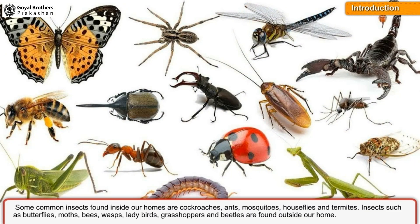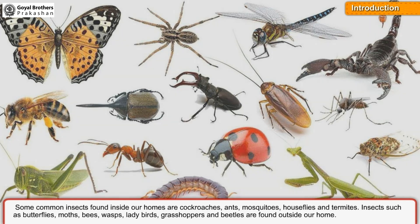Insects are tiny animals with six legs. They form the largest group of living organisms on earth. Some insects creep or crawl on their legs, but most of them have wings to fly. Some common insects found inside our homes are: